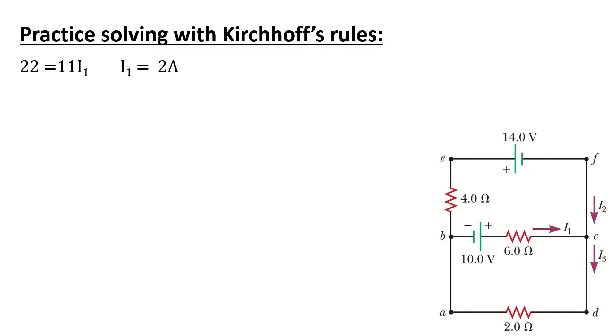So, 22 equals 11 I1, therefore I1 equals 2 ampere. Substituting this value of I1 into equation 5 gives I2, which will be equal to negative 6 ampere.